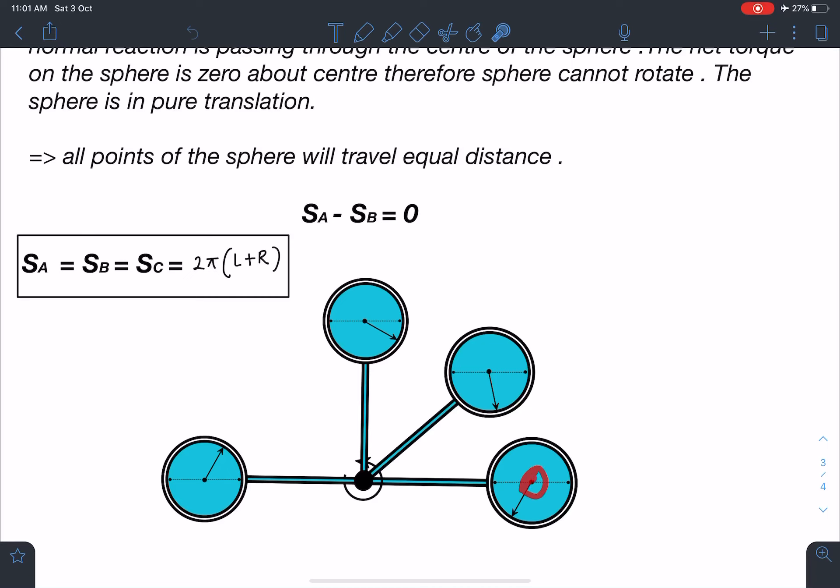That distance is going to be equal to C as well. So center C is always at a distance of L plus R and all the particles on this rigid body are moving in a circle of radius L plus R.